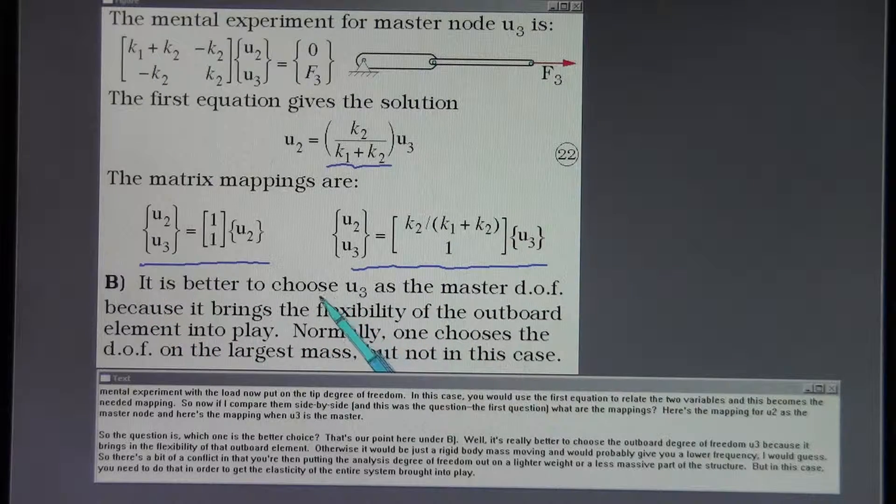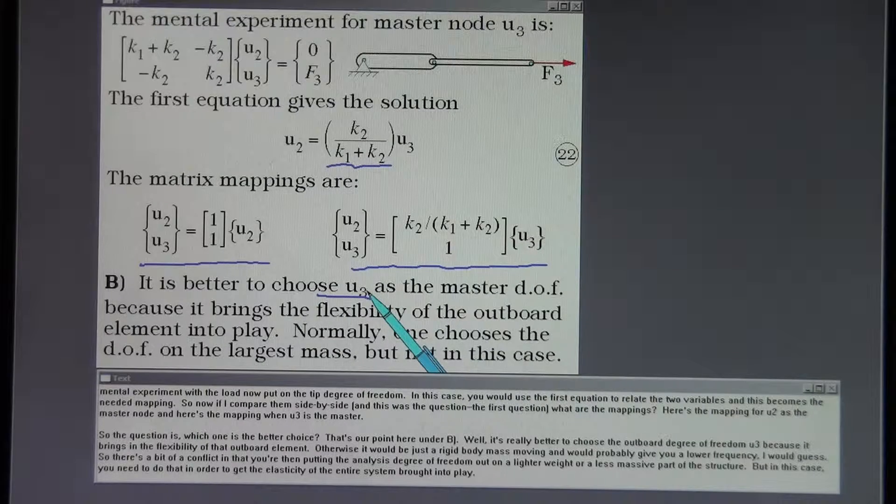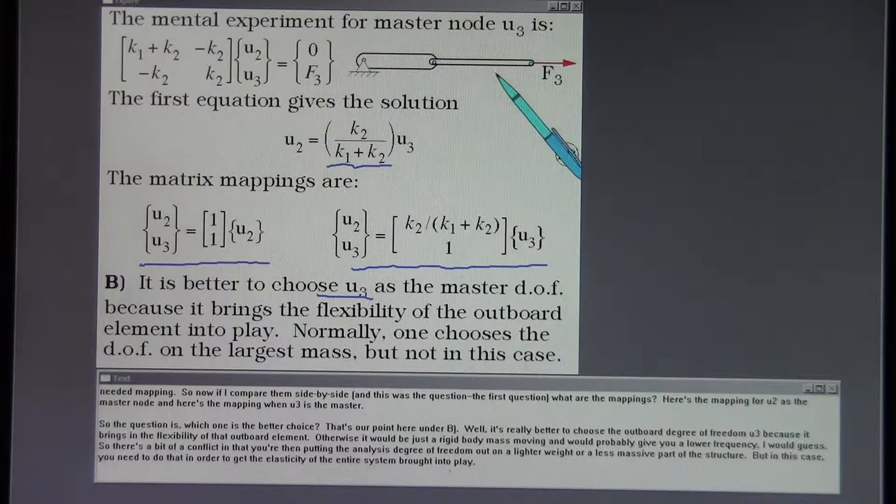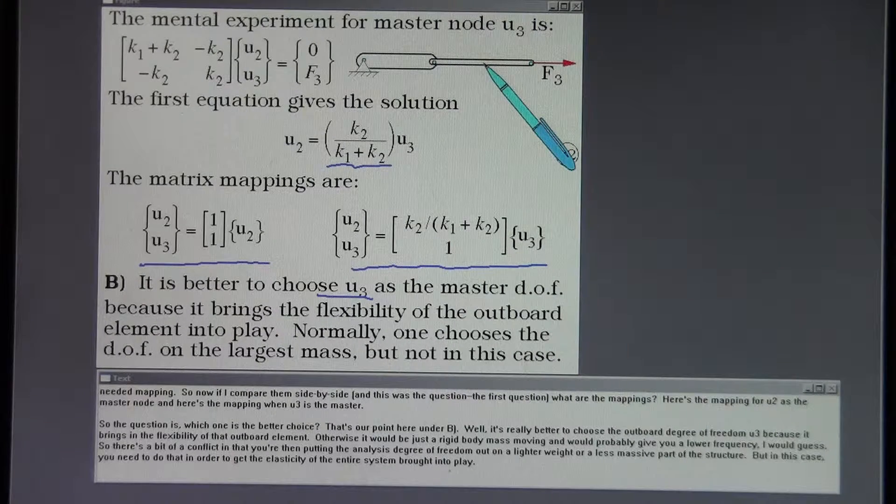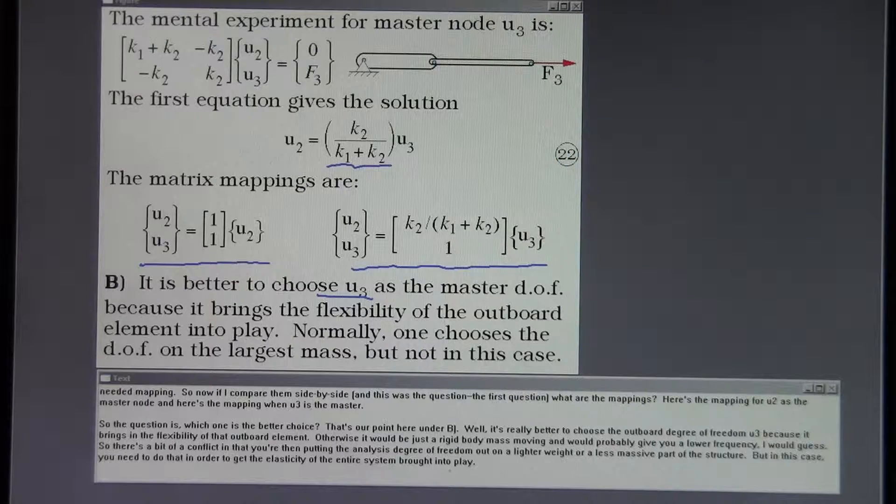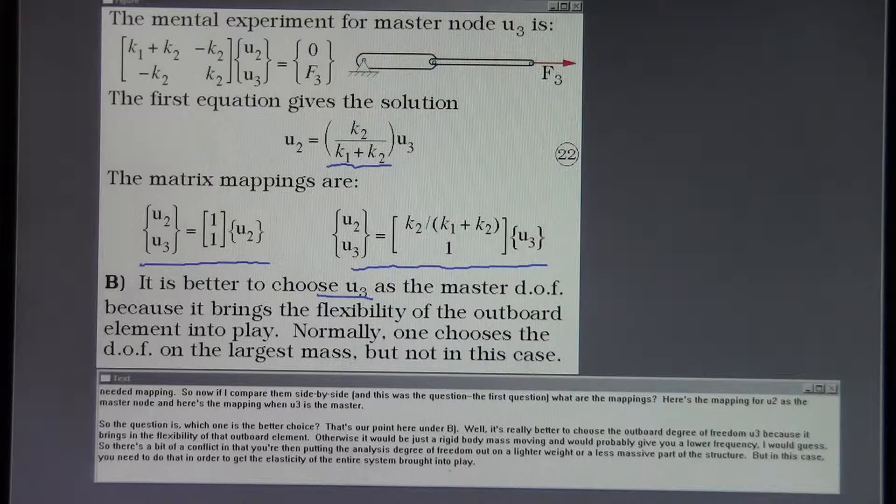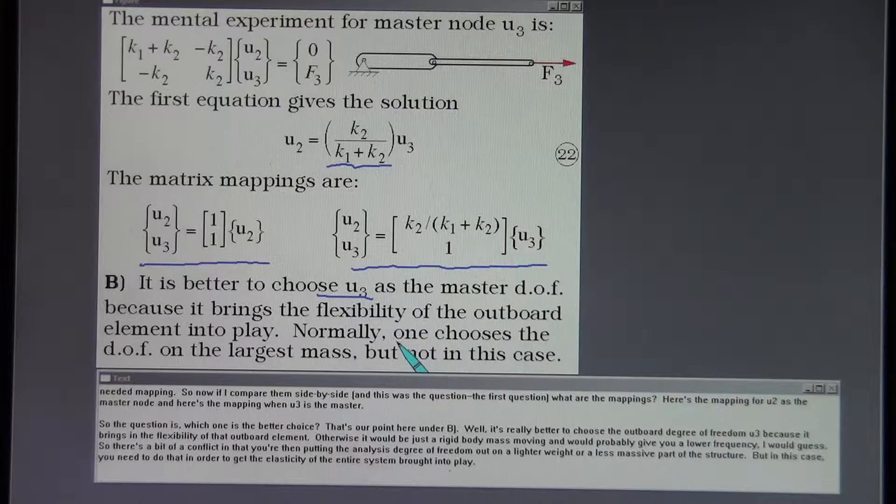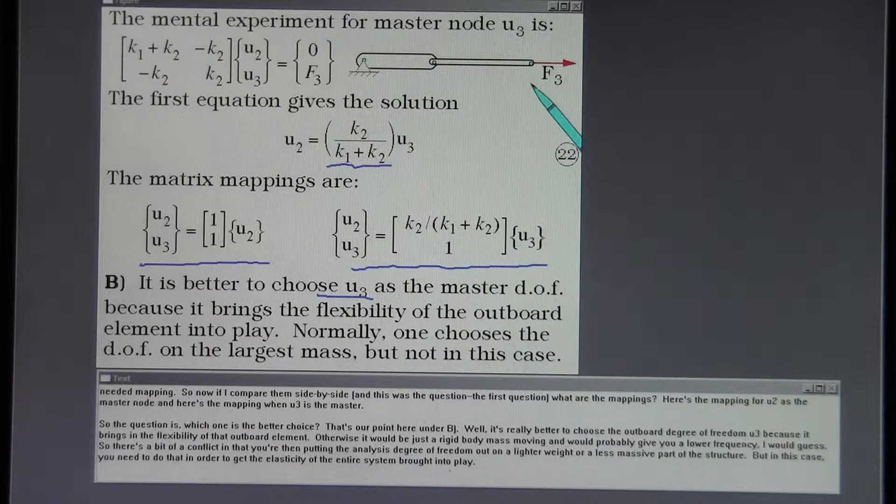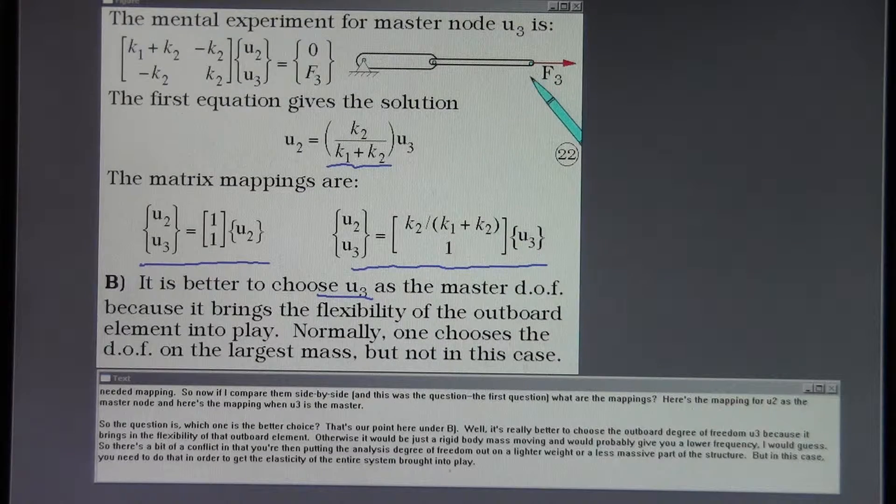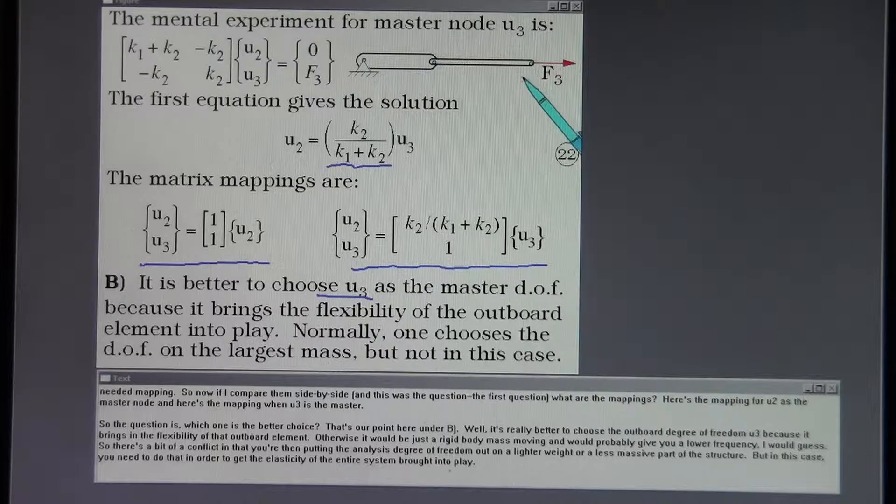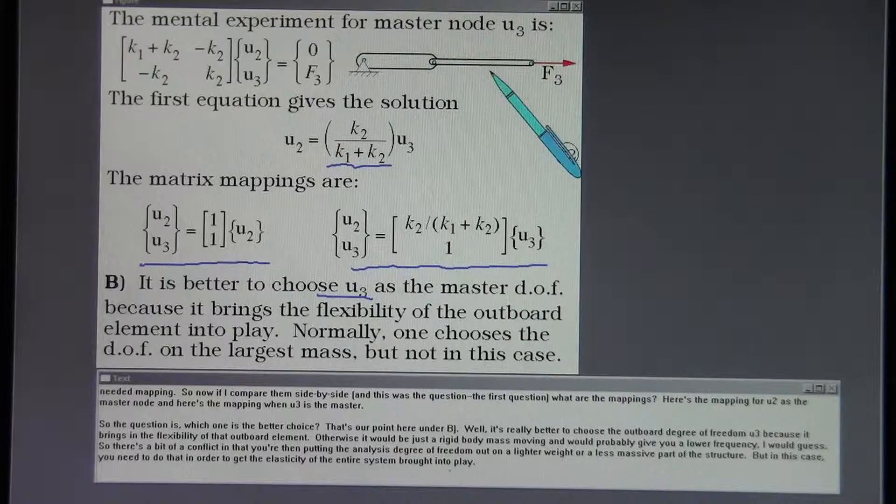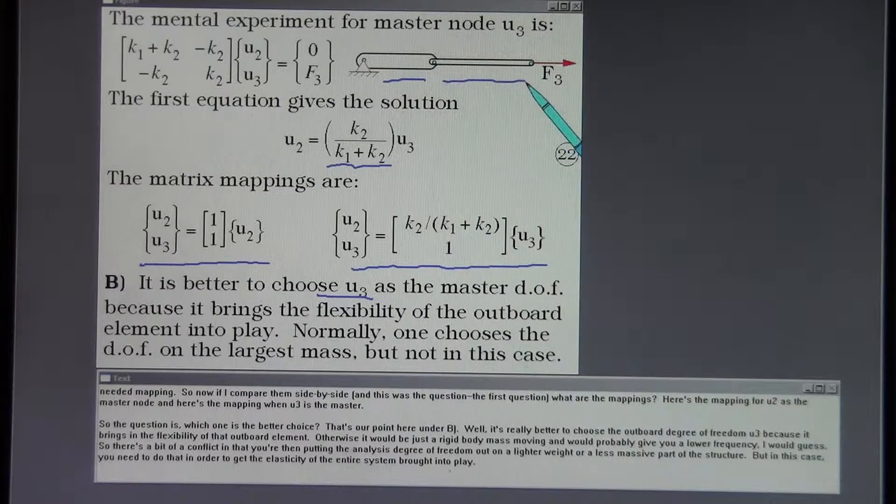Well, it's really better to choose the outboard degree of freedom, U3, because it brings in the flexibility of that outboard element. Otherwise it would be just a rigid body mass moving and would probably give you a lower frequency, I would guess. So there's a bit of a conflict in that you're then putting the analysis degree of freedom out on a lighter weight or a less massive part of the structure. But in this case you would need to do that in order to get the elasticity of the entire system brought into play.